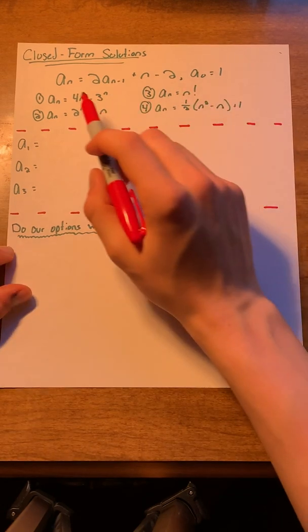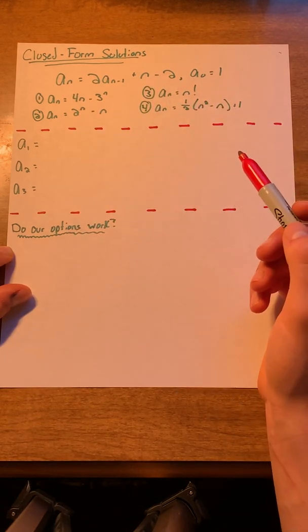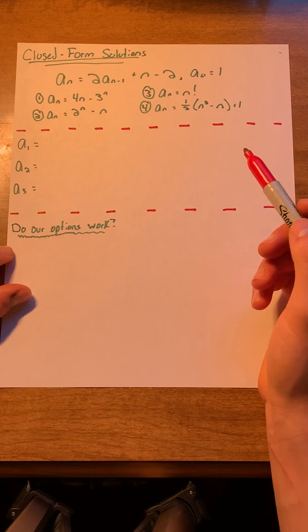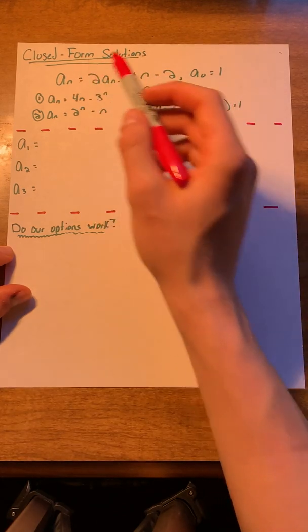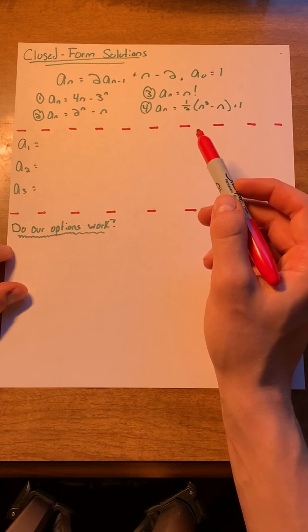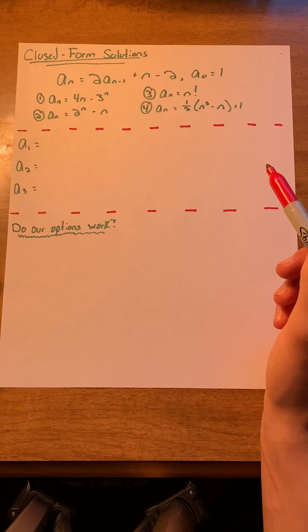Today, I'll be going over an easier way to solve multiple choice problems involving finding the closed form solution to recurrence relations. You've seen a couple problems where you've been given a recurrence relation and then multiple options for what the closed form solution could be. We know that one way to solve this problem would be to take the recurrence relation and plug it back into itself until finding a pattern. However, when faced with a multiple choice problem, there's actually an easier way to go about this.